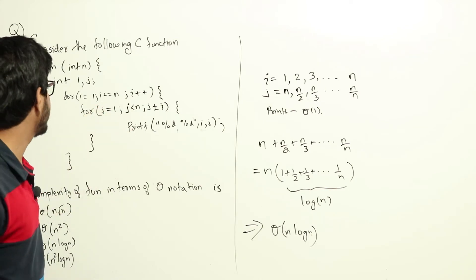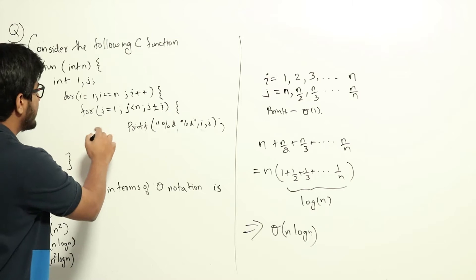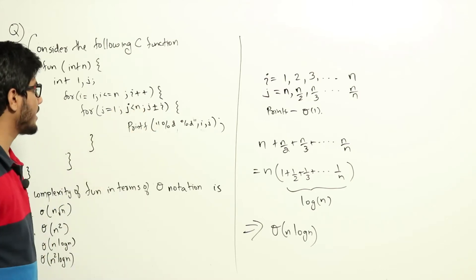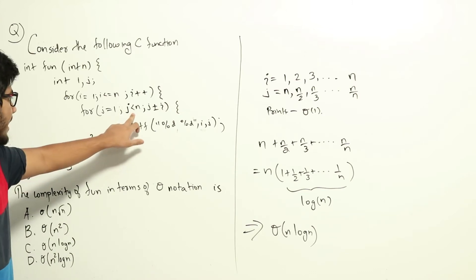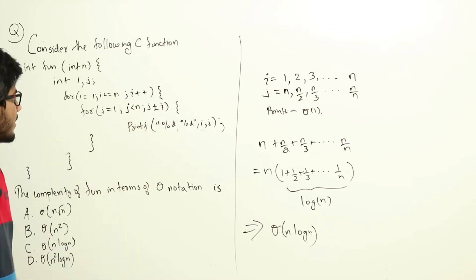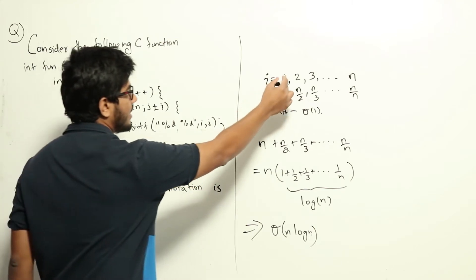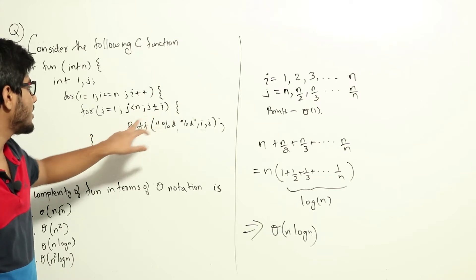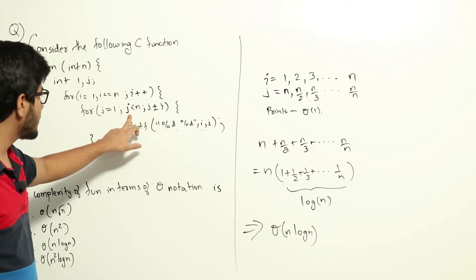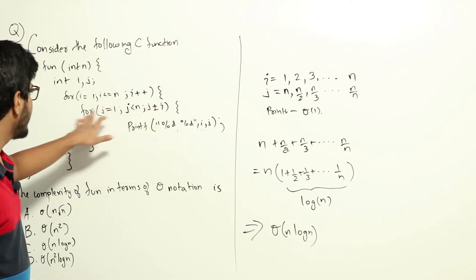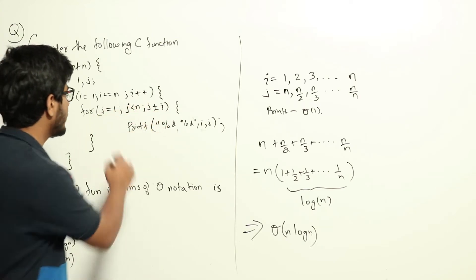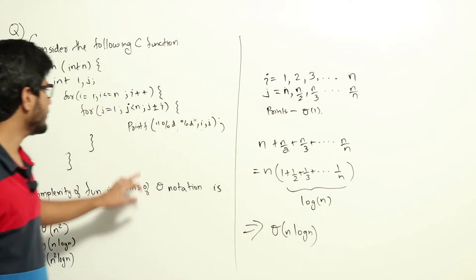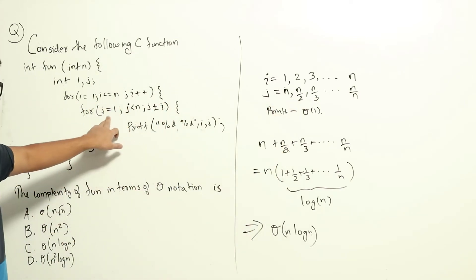For each value of i, let us see what j will take. The loop for j is: j equal to 1, j less than n, j plus equal to i. So j starts from 1 and grows up to n in increments of i. When i is 1, j will be 1, then 2, then 3, and so on up to n — meaning the loop will run n times.